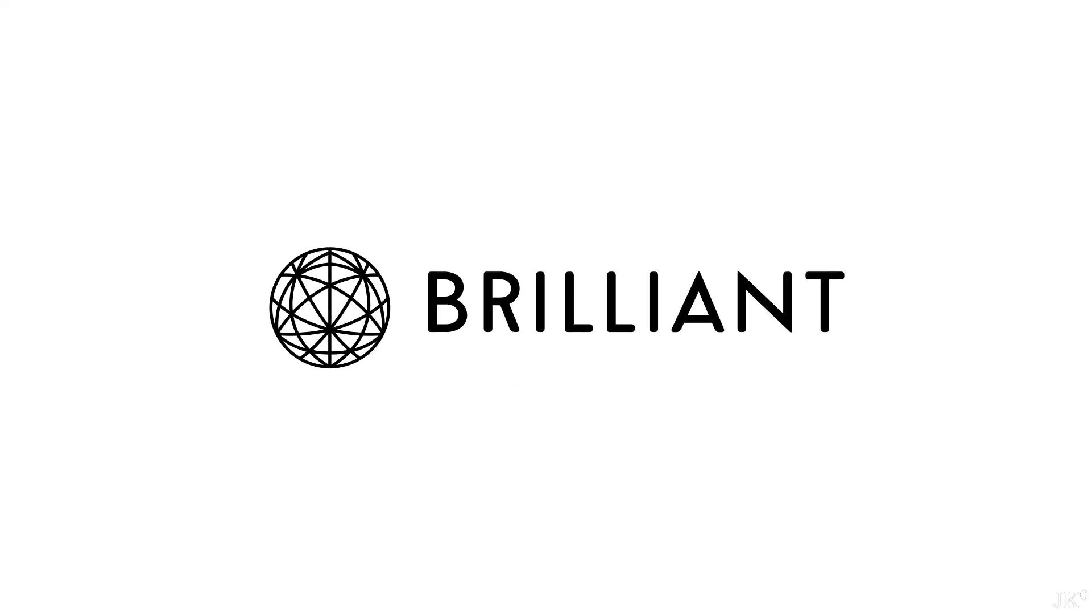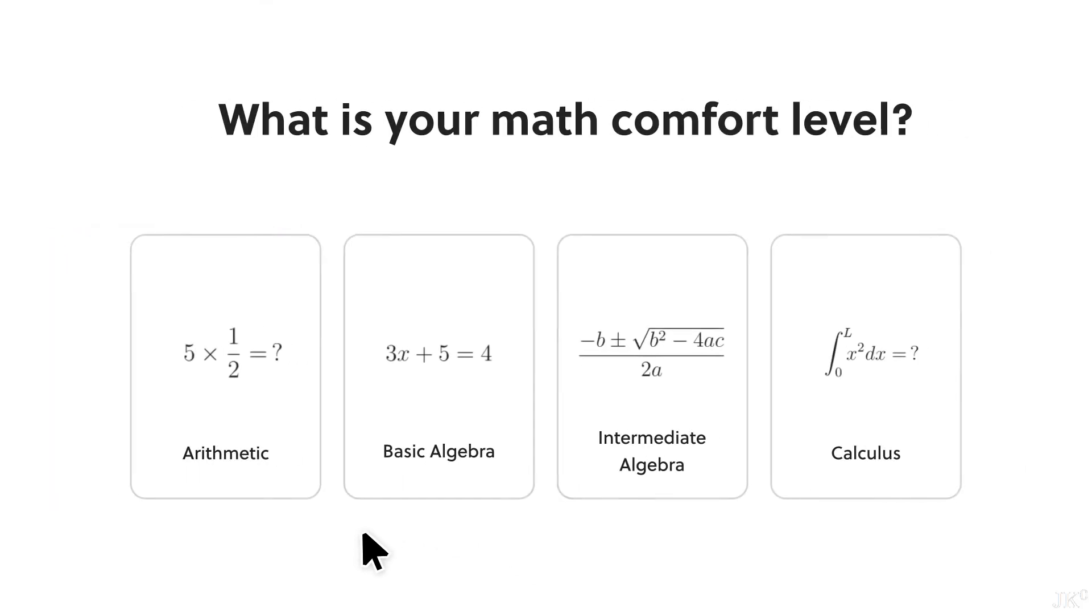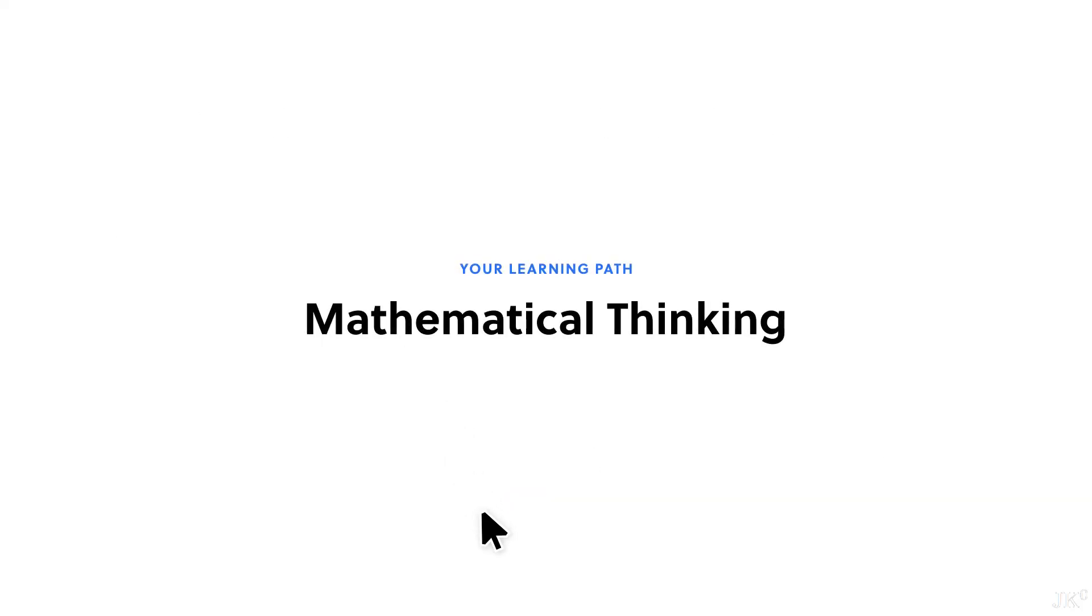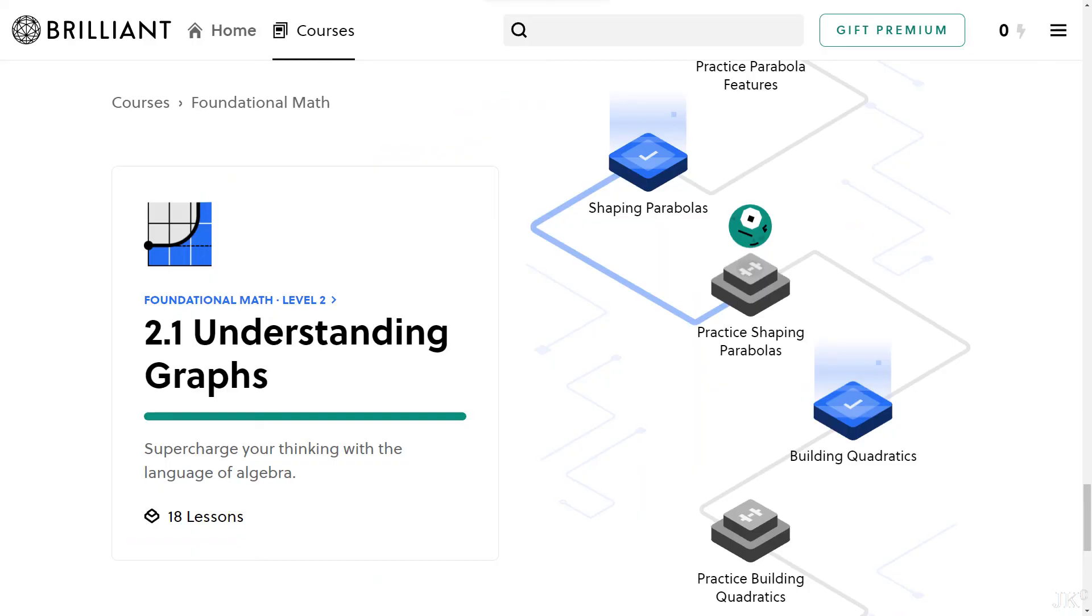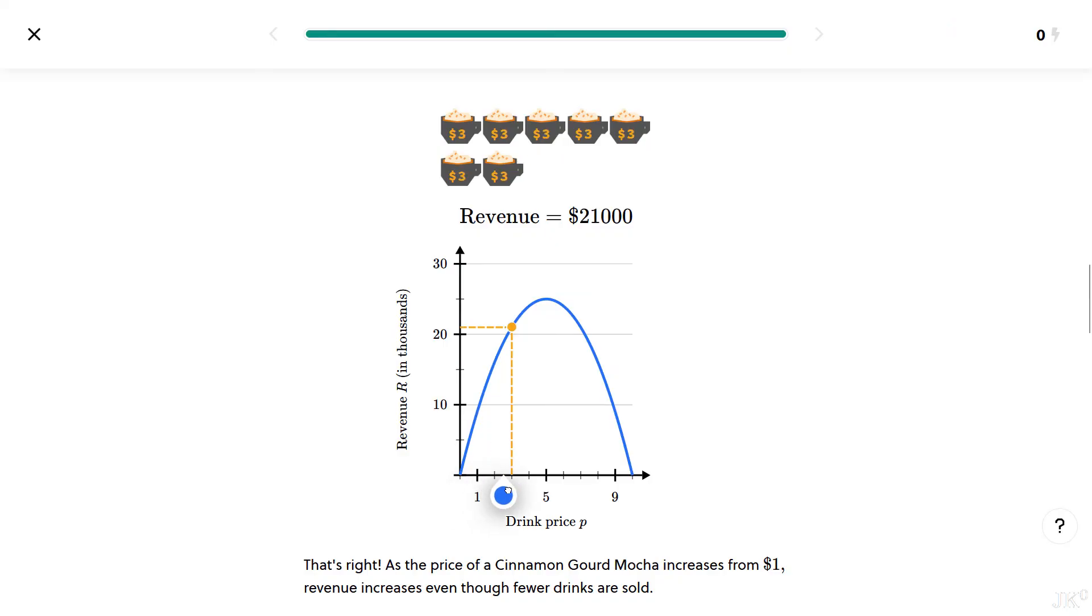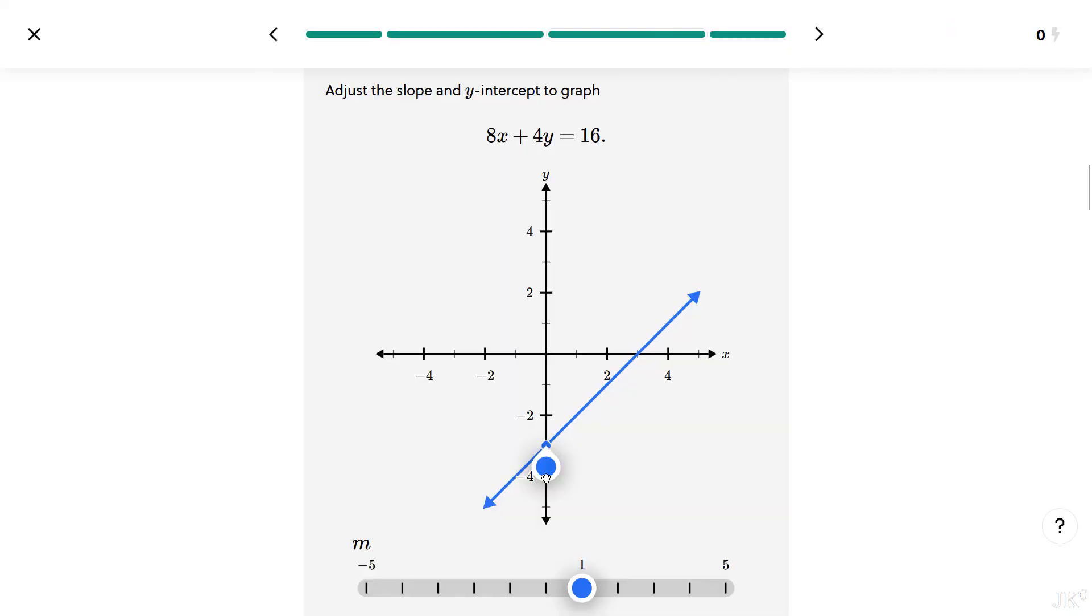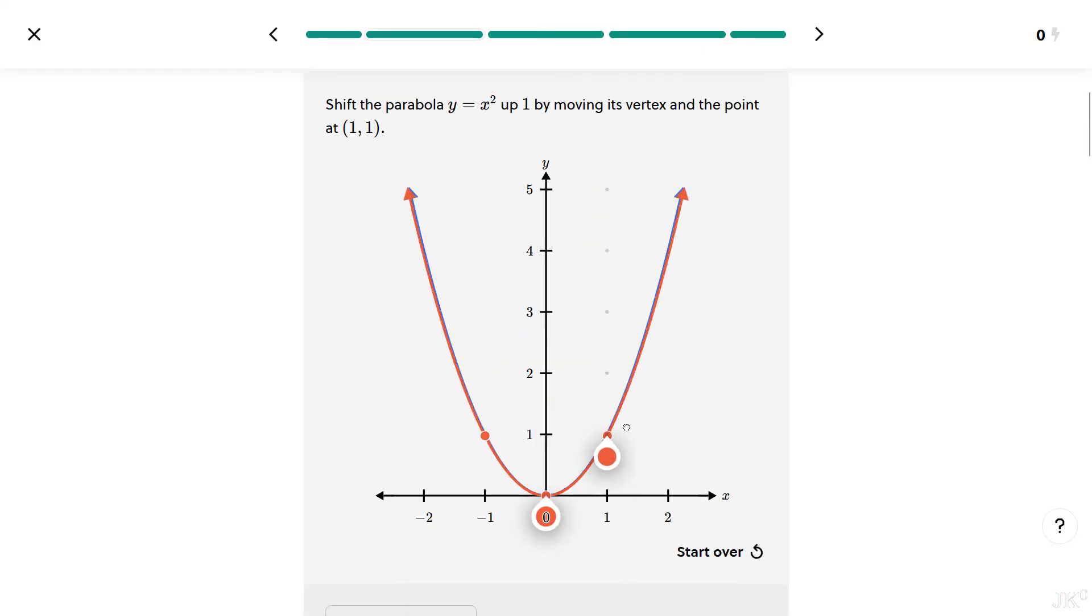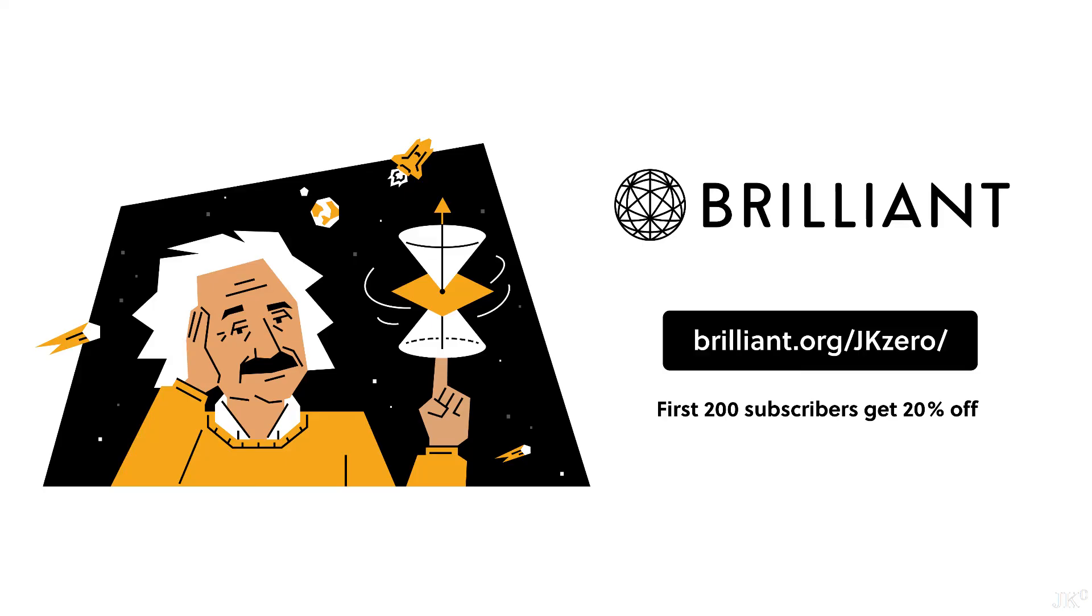This video was sponsored by Brilliant. Brilliant is fun and interactive, with thousands of lessons from basics to advanced topics and new lessons added every month. Related to today's video, let me recommend the course Understanding Graphs. The content includes revealing patterns, optimization, and solving problems with graphs. Following fun stories and interactive lessons will help you master these concepts. The first 200 of you will get 20% off Brilliant's annual premium subscription. Get access to all the courses that Brilliant has to offer free for a full 30 days. Visit brilliant.org slash jk0 or click on the link in the description.